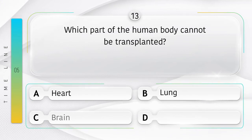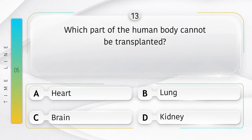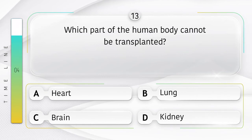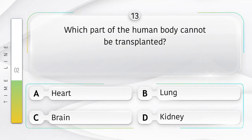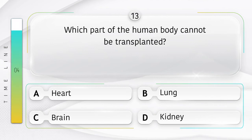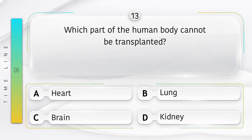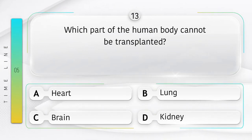Which part of the human body cannot be transplanted? Option A: heart, B: lung, C: brain, D: kidney. We don't know the answer — if you know the answer, please comment it in the comment box.